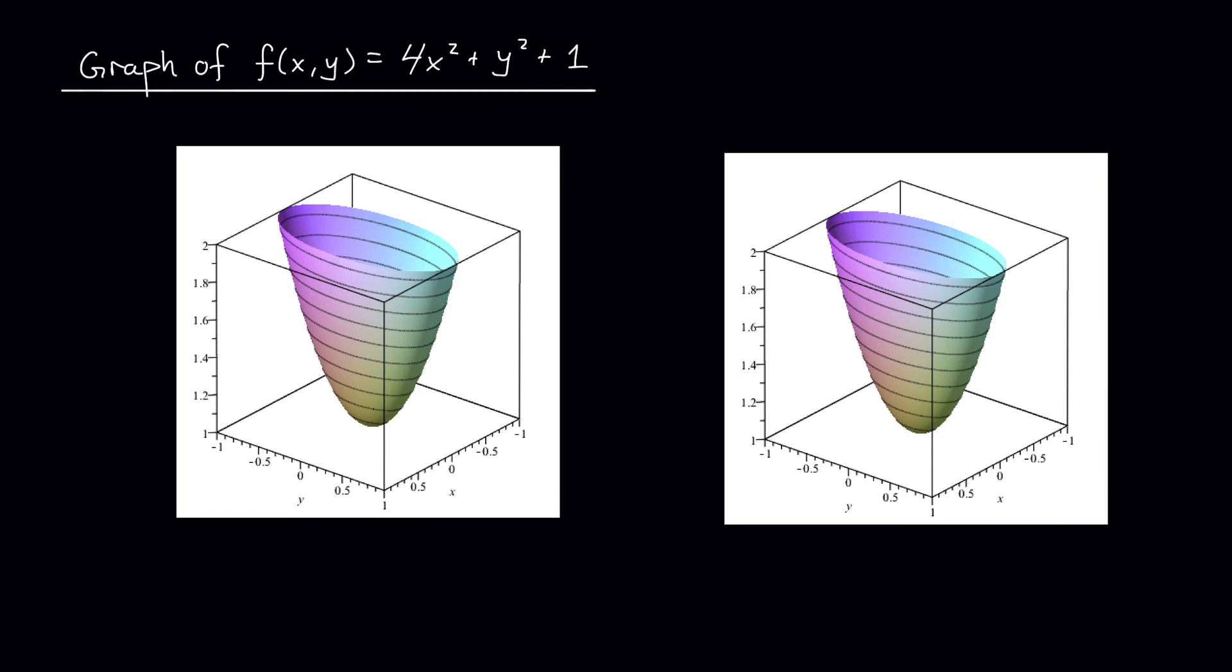So now I'm going to look for some of its vertical traces. If I set, say, y equals k, that's what I get by slicing this graph along the y-axis. Well, that gives us the equation z equals 4x² plus k² plus 1. Now remember, k is a constant. So this is the equation of a parabola, a long, skinny parabola in the xz plane.